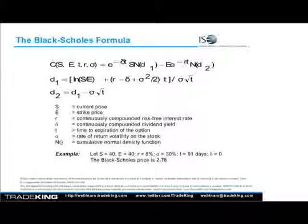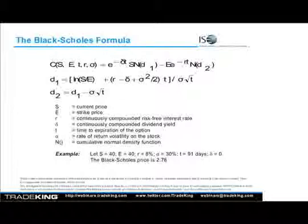This is the Black-Scholes pricing formula — the first model ever used to price an option contract. Fisher Black and Myron Scholes basically said: if you give me five variables — the current price, the strike price, the continuously compounded risk-free interest rate, the dividend yield, the rate of time to expiration, and the volatility of the underlying — we can give you a starting point for the price of your option contract. In our example here, putting all of that in, it spews out a price and says the option is theoretically worth $2.78.